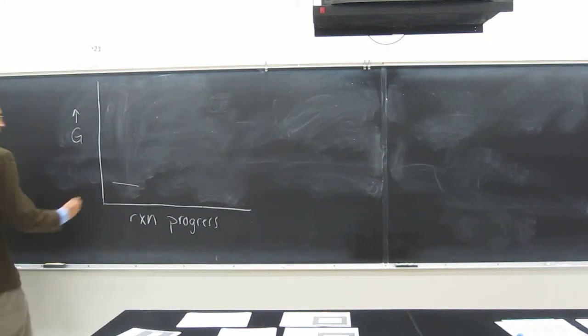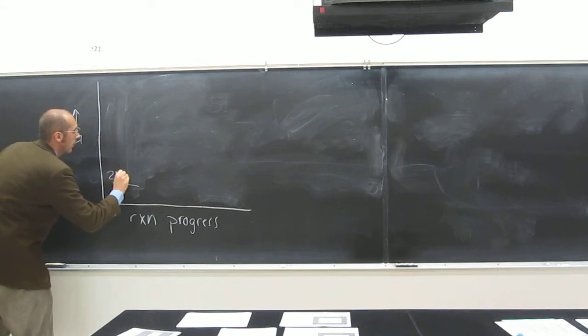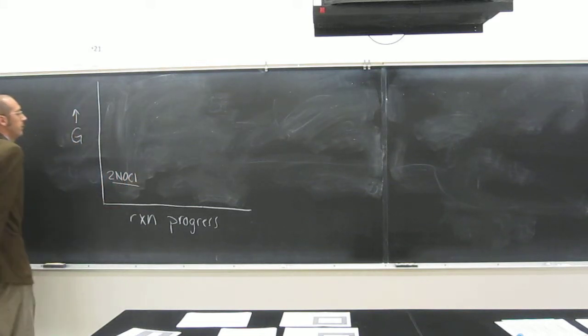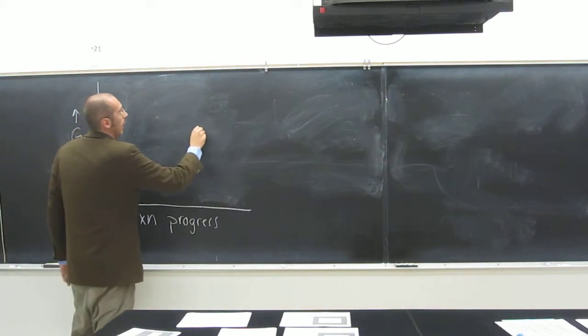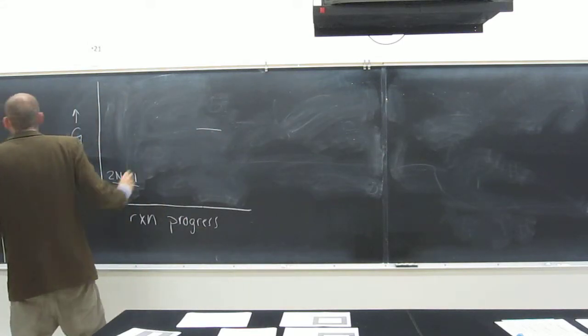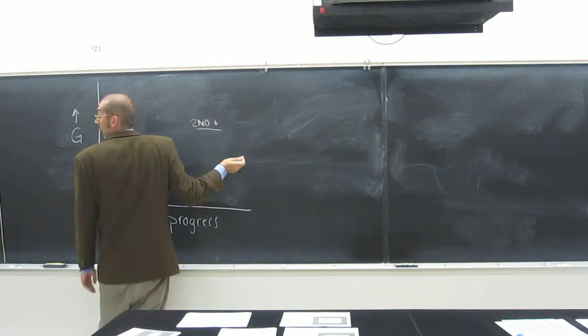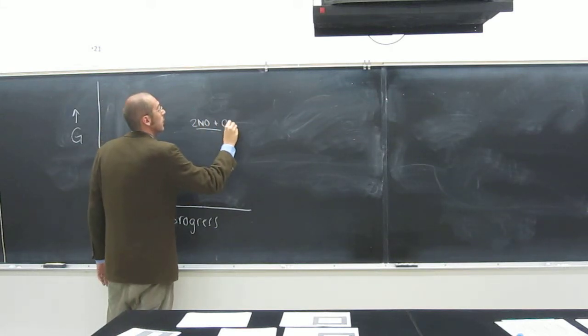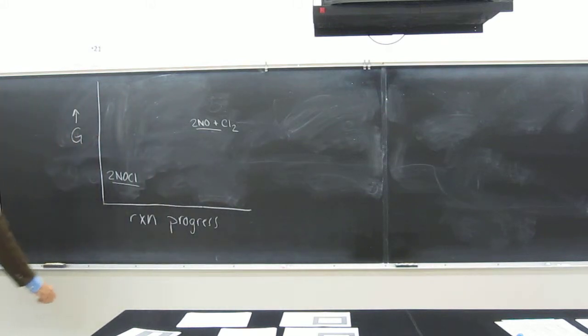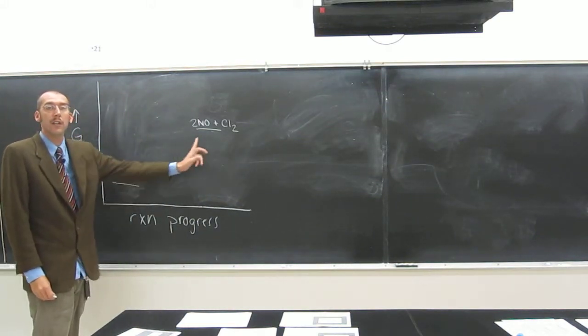It's hard for me to look over there, so I'm just going to look over there. 2NOCl, okay? And then we've got, up here, 2NO plus Cl2. So you see, lower energy, higher energy.